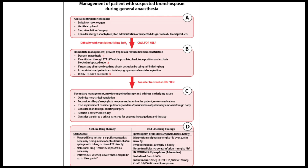When you suspect bronchospasm during general anesthesia, first switch to 100% oxygen and ventilate the patient by hand. Stop the surgery or any stimulation. Consider allergy or anaphylaxis and stop administration of any suspected drug. If you are having difficulty ventilating or there is a fall in saturation, call for help. Deepen the plane of anesthesia. If ventilation through the endotracheal tube is not possible, check the position of the tube and exclude whether the tube is blocked. In non-intubated patients, exclude laryngospasm and consider aspiration.